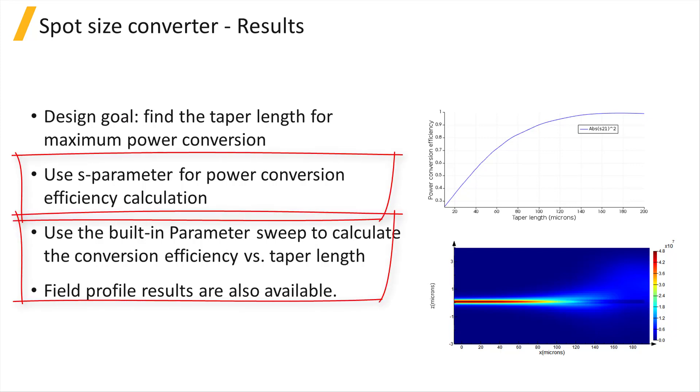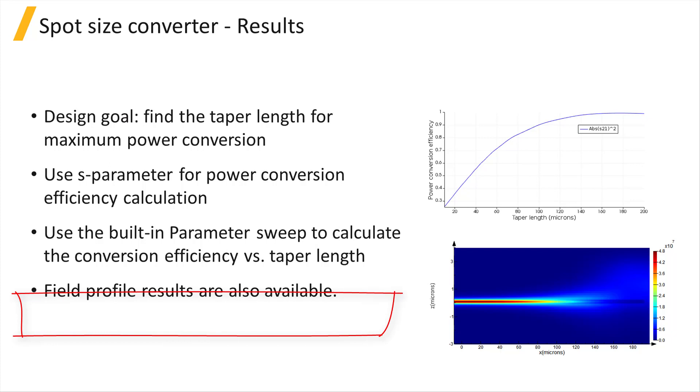This can be tracked by monitoring the S-parameter results. The conversion efficiency as a function of taper length can then be calculated using the propagation sweep feature. Field profiles at various cross sections of the device can also be calculated and analyzed.